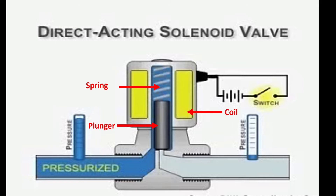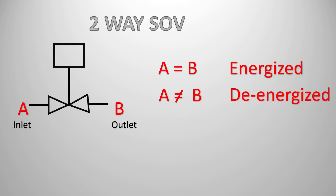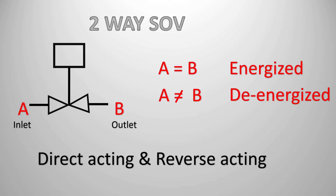There are different types of solenoid valves. A two-way solenoid valve has two ports: port A is the inlet and port B is the outlet. When the solenoid valve gets energized, A equals B, meaning the inlet and outlet ports get connected. When the solenoid coil de-energizes, A is not equal to B, so both ports get disconnected. We also have direct-acting and reverse-acting solenoid valves, which work vice versa.